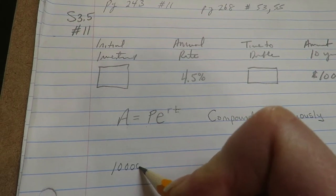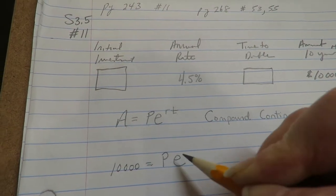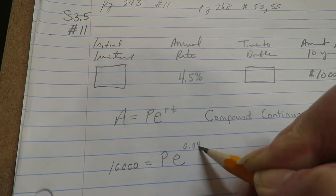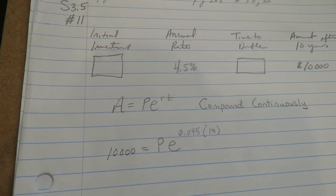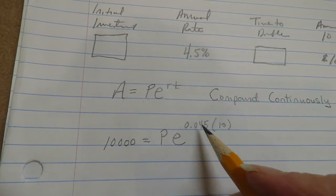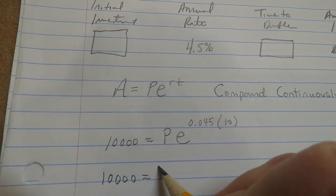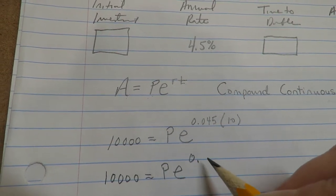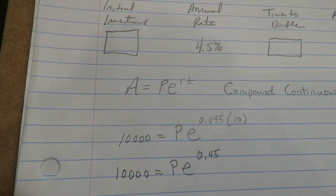So A is $10,000, P we don't know, r is 0.045, t is 10. Let me just move this over one decimal place. So 0.045, okay, 10 times this would be 0.45.